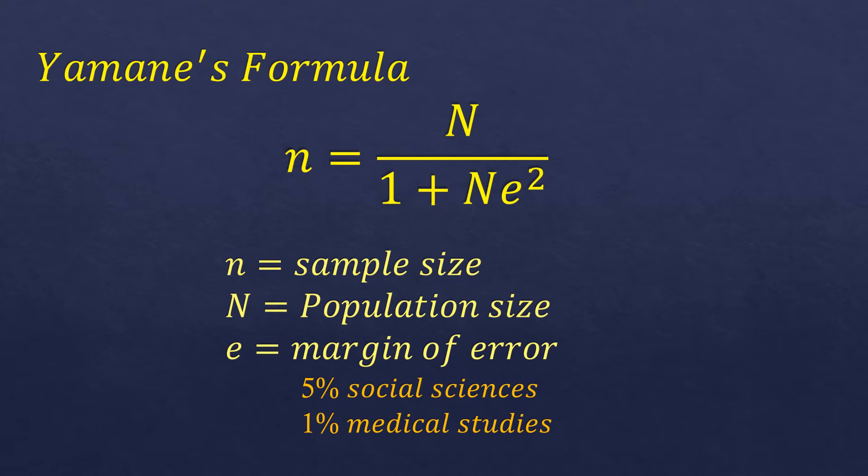We're using this formula when we know only the population size. If we know the other things, like the attributes, how many percent of this population size knows how to play basketball, if your research is about those who play basketball. If you know those other information, then you can use the other formula, like Cochran's formula.